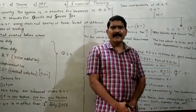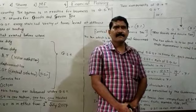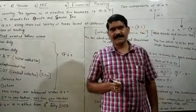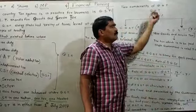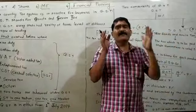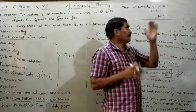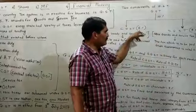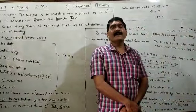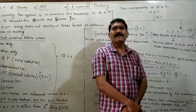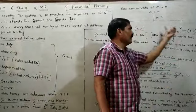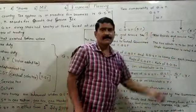For example, if you purchase anything and the GST rate is 10%, the two components are CGST and SGST. You have to pay 10% to the government, but you divide the GST into two equal parts — 5% goes to the central government as CGST and 5% goes to the state government as SGST.